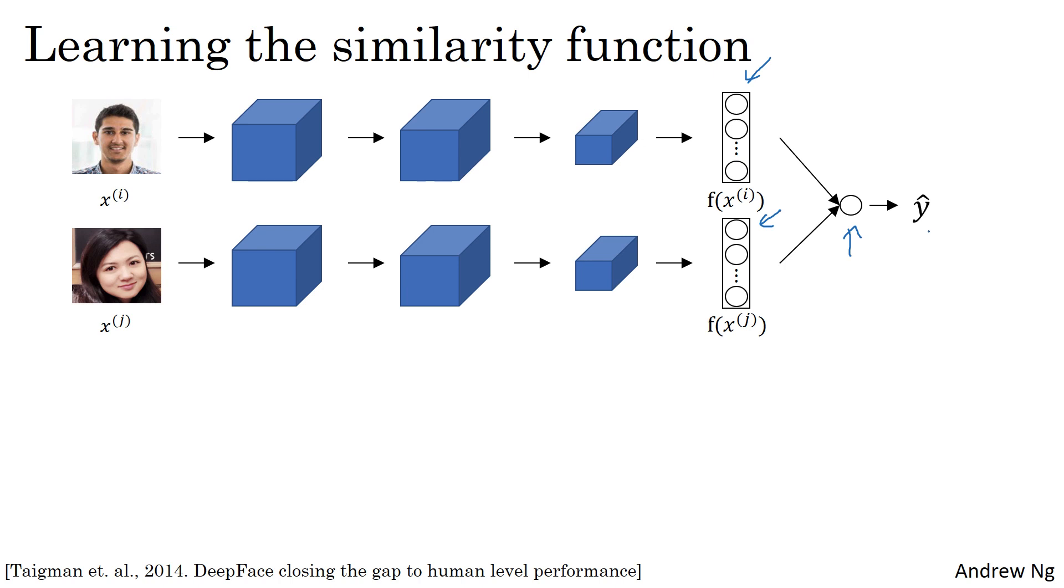Where the target output will be one if both of these are the same persons, and zero if both of these are of different persons. So this is a way to treat face recognition just as a binary classification problem.